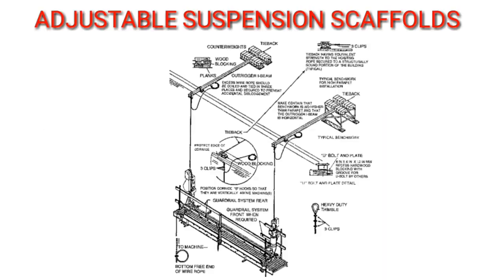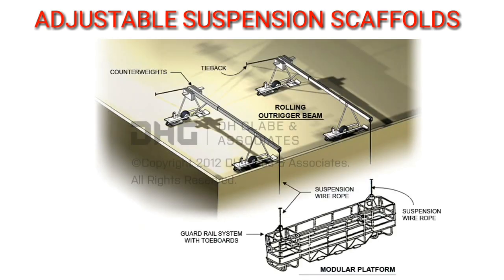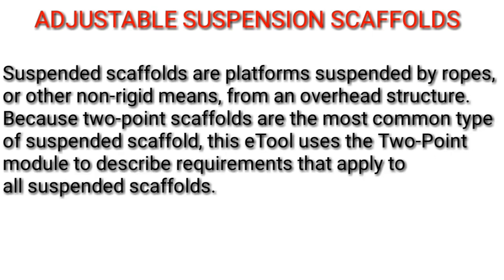Suspension scaffolds. Suspended scaffolds are platforms suspended by ropes or other non-rigid means from an overhead structure. Because two-point scaffolds are the most common type of suspended scaffold, this e-tool uses the two-point module to describe requirements that apply to all suspended scaffolds.